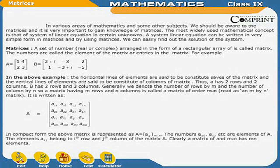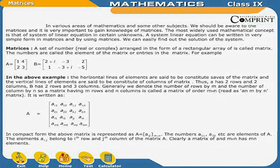It is written as A equals to A11, A12 up to A1n and Am1, Am2 up to Amn. In compact form, the above matrix is represented as A equals to Aij, m by n. The numbers A11, A12, etc. are elements of A. The element Aij belongs to the ith row and jth column of matrix A. Clearly, a matrix of order m by n has mn elements.